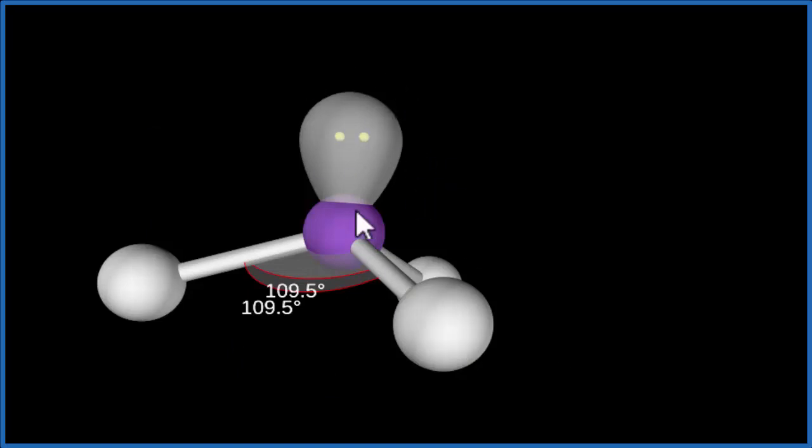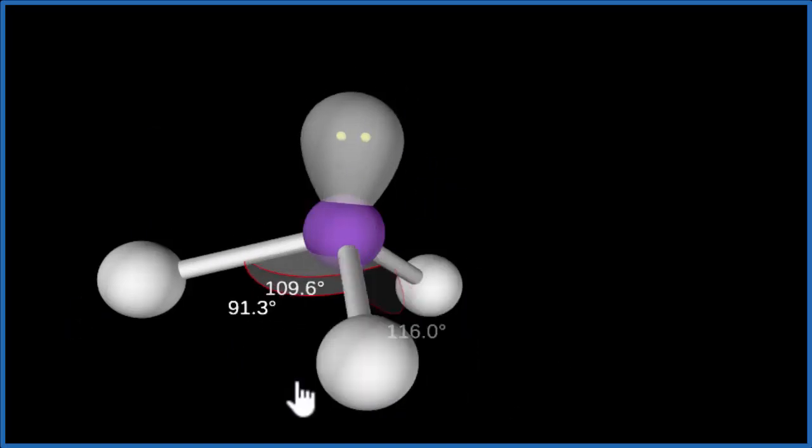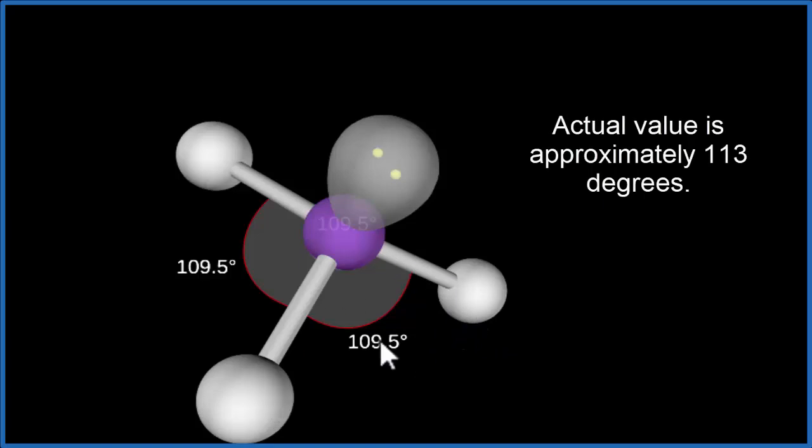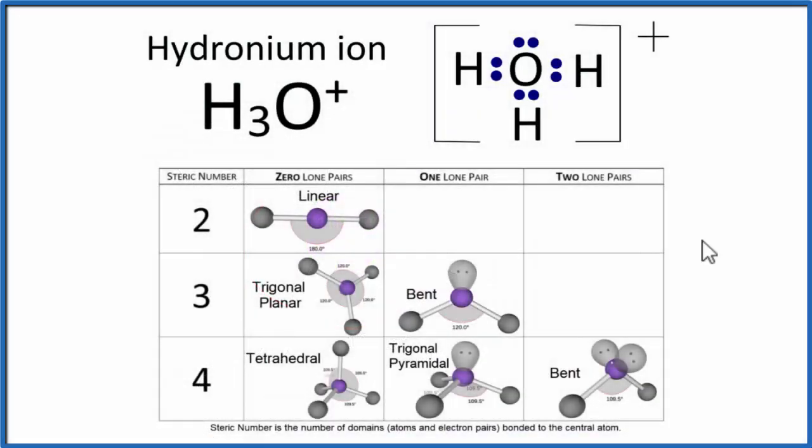This lone pair here is what's pushing these hydrogen atoms down. This bond angle here, 109.5, will probably be a little bit different because of the way the lone pair is pushing the hydrogens down. So that's the molecular geometry for the hydronium ion, H3O+. This is Dr. B, and thanks for watching.